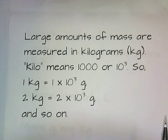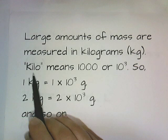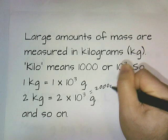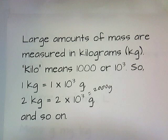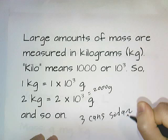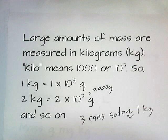To measure larger amounts of mass, we use the kilogram. The prefix kilo means one thousand, or ten to the third. So one kilogram is one times ten to the third grams, and two kilograms is two times ten to the third grams, or two thousand grams. If you take three cans of soda and try to lift them, you're holding about a kilogram — actually about 1.1 kilograms. So three cans of soda are about the equivalent mass of one kilogram.